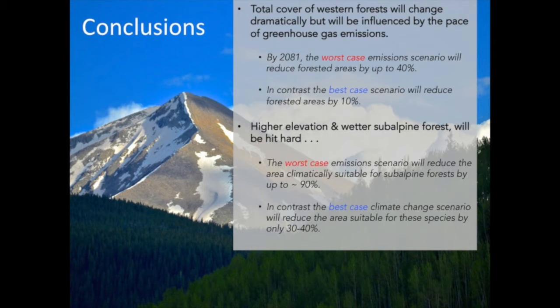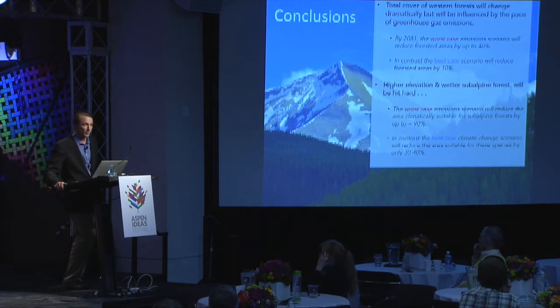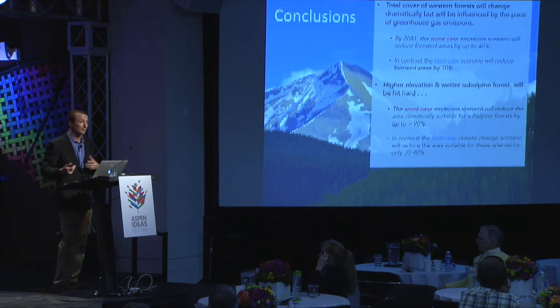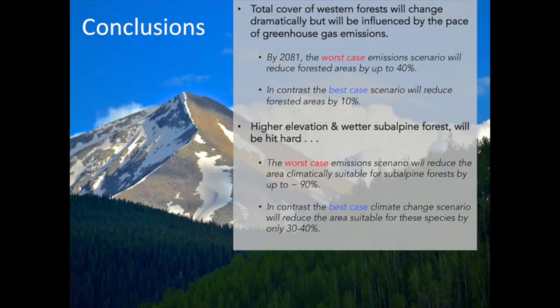The total cover of western forests will change dramatically, but the pace and amount of loss are going to be dramatically influenced by the pace of greenhouse gas emissions. Even small reductions are going to lead to very significant effects down the road. In the worst-case scenario, we could be talking about a reduction of suitable climate space by up to 40% of the western US — that's 40% less biomass stored, 40% less carbon stored and taken up by forests. Effectively we're losing 40% of our buffer to climate change. Under the best-case scenario, forested areas will still decrease by 10% — the carbon's already in the air. Higher elevation subalpine fir forests are going to be especially hard hit. Drive over McClure Pass: the aspen clones up here are already showing quite a bit of stress, and you're already seeing quite a bit of mortality. The past 10 years have experienced dramatic mortality of western forests, and unfortunately it looks as if that will only continue if not increase.